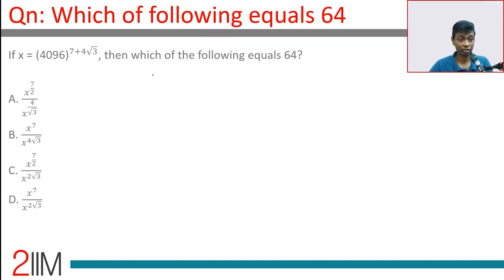x equals 4096 to the power 7 plus 4 root 3. Which of the following equals 64? Now, being numerically comfortable is very helpful. 64 squared is 4096. This is 2 to the power 6, this is 2 to the power 12.